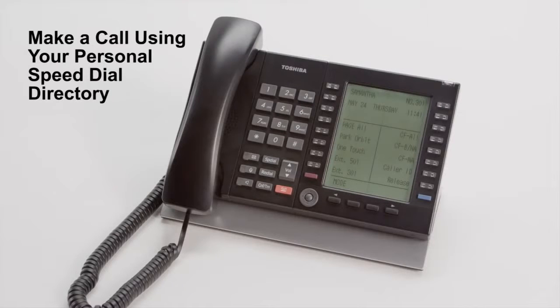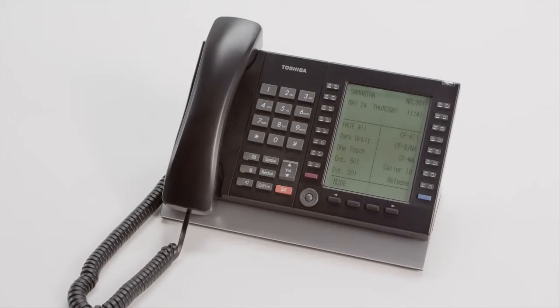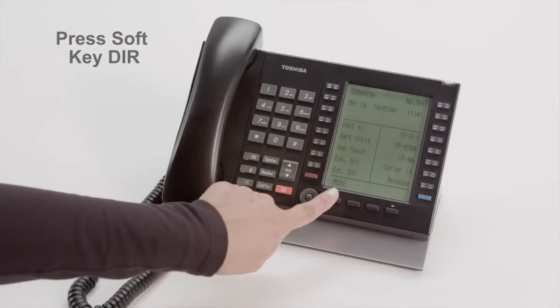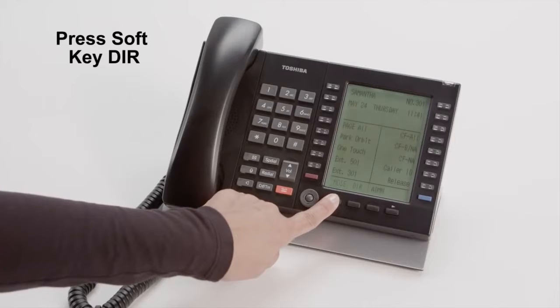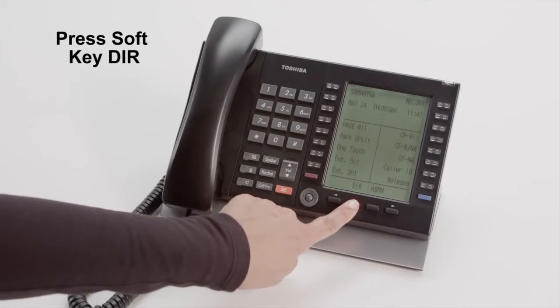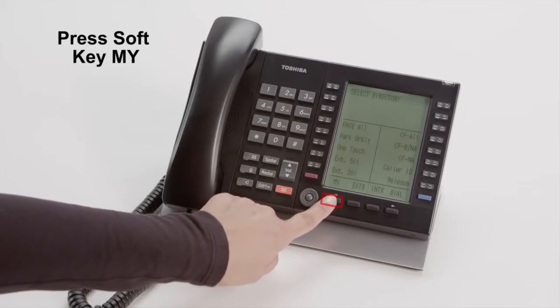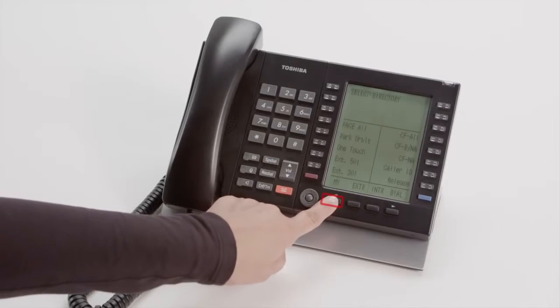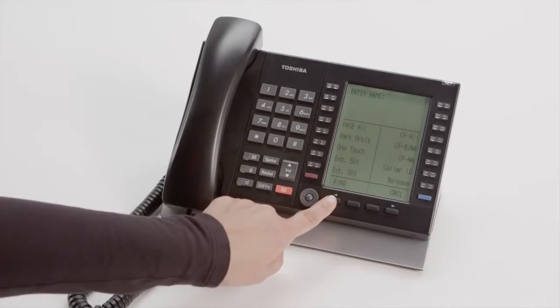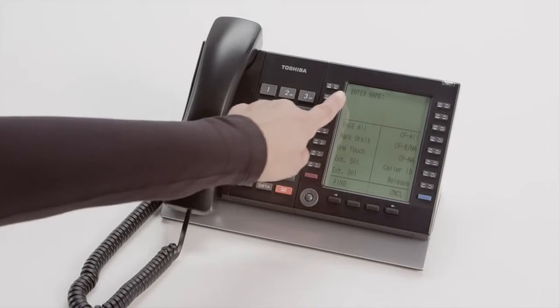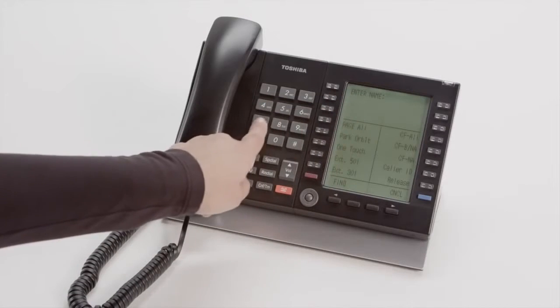To make a call using your personal speed dial directory, press the soft key DIR, press the soft key MY, enter T for all names beginning with a T.